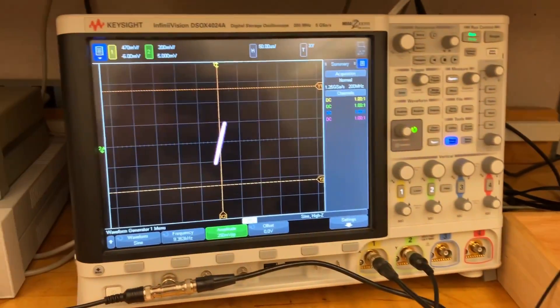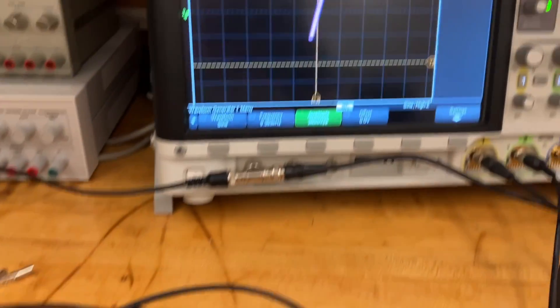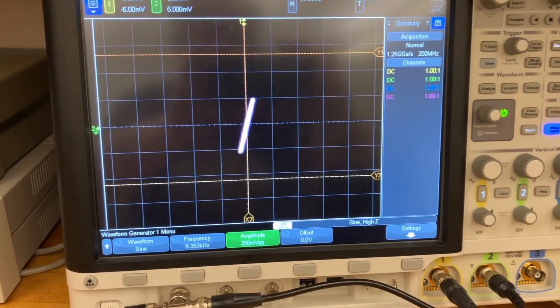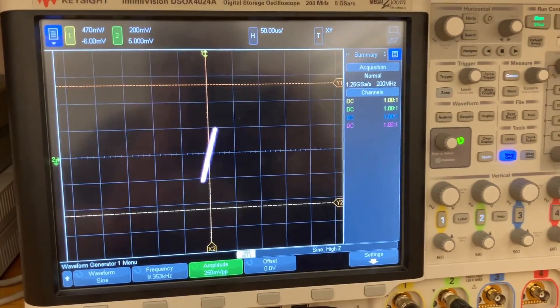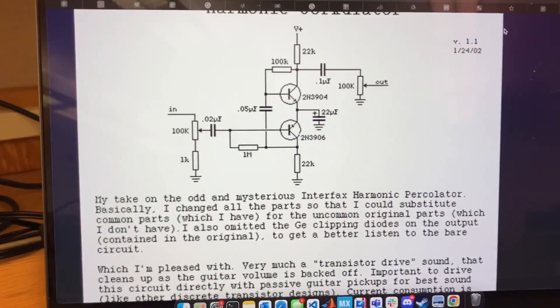Okay, so right now we have the input coming from the signal generator on the scope, just a sine wave, and we're looking at the output. And I have both of these pots turned all the way up.